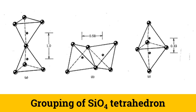Almost always, the tetrahedrons only share a corner, because this maximizes the distance between the silicon cations at the center. Tetrahedrons sharing an edge are very uncommon — the cation-to-cation distance in this case is reduced to nearly half, causing inter-cation repulsion which severely distorts the tetrahedron. Finally, tetrahedrons sharing a face is never found when both of the tetrahedrons are occupied by silicon, as it makes the structure highly unstable.